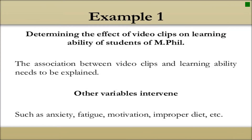For example, the association between video clips and learning ability needs to be explained because there are other variables that intervene, like anxiety, fatigue, motivation, improper diet, etc. So in the example of determining the effect of video clips on learning ability of students, the variables that intervene include anxiety, fatigue, motivation, improper diet, and others.